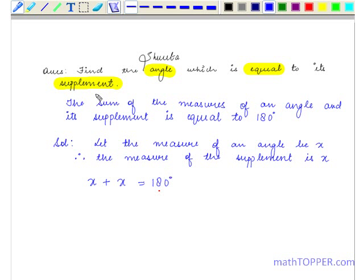As I just showed you that the sum of the measures of an angle and its supplement is equal to 180 degrees. This x is for the angle and this x is for the supplement.